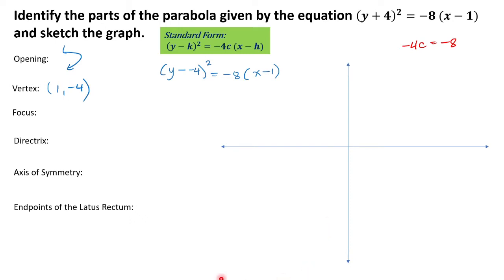So, let's try to sketch the graph of this given parabola. For our vertex, we have 1, negative 4. Let's say this is 1 and this is our negative 4. So, this is our vertex.